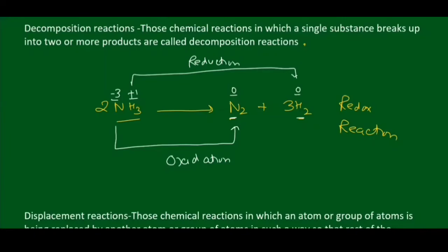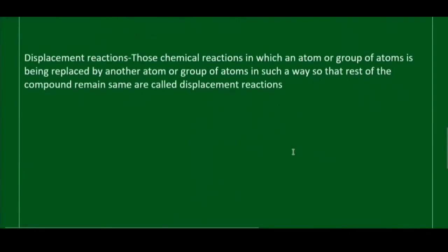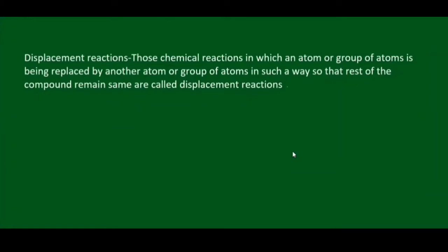Next is Displacement Reactions. What are Displacement Reactions? Those chemical reactions in which an atom or group of atoms is replaced by another atom or group of atoms, in such a way that the rest of the compound remains the same — these are called Displacement Reactions. For example: Zn + CuSO₄ → ZnSO₄ + Cu.